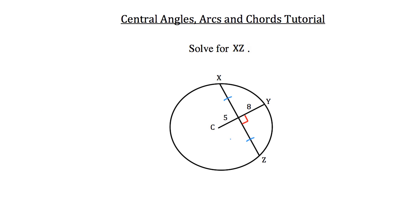So what we want to do is mark that they're also congruent to each other — so that this piece is congruent to this piece. Now, all we have to do is to solve for one of these lengths. I'm just going to call the intersection point D for the purpose of this problem. We want to solve from either D to X or D to Z. I'm going to go ahead and solve from D to Z.